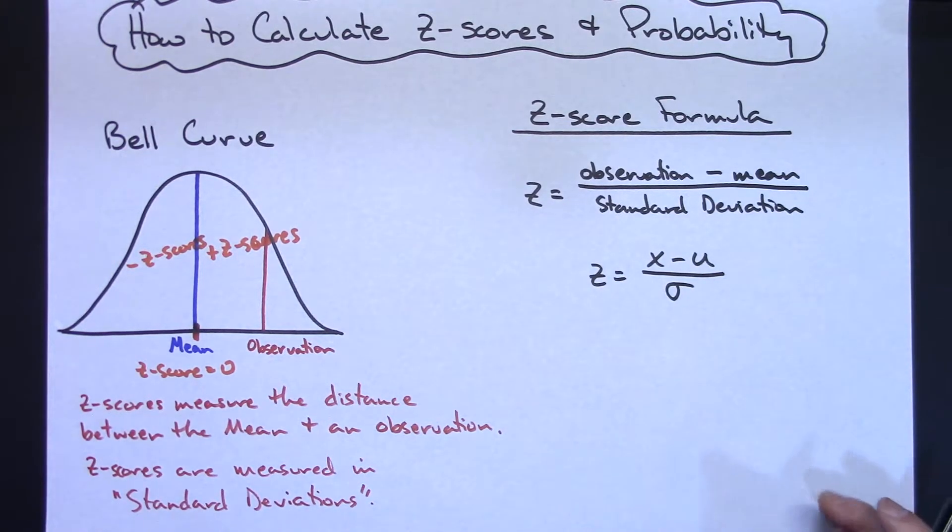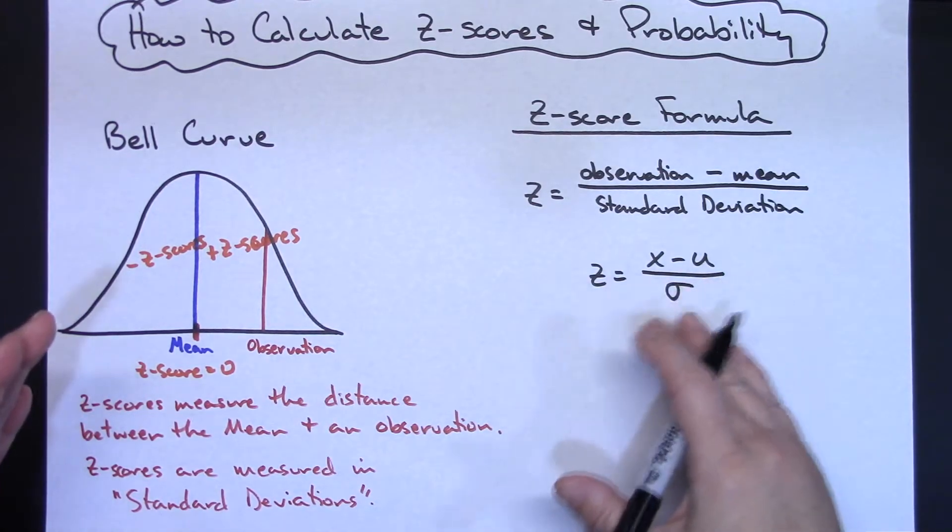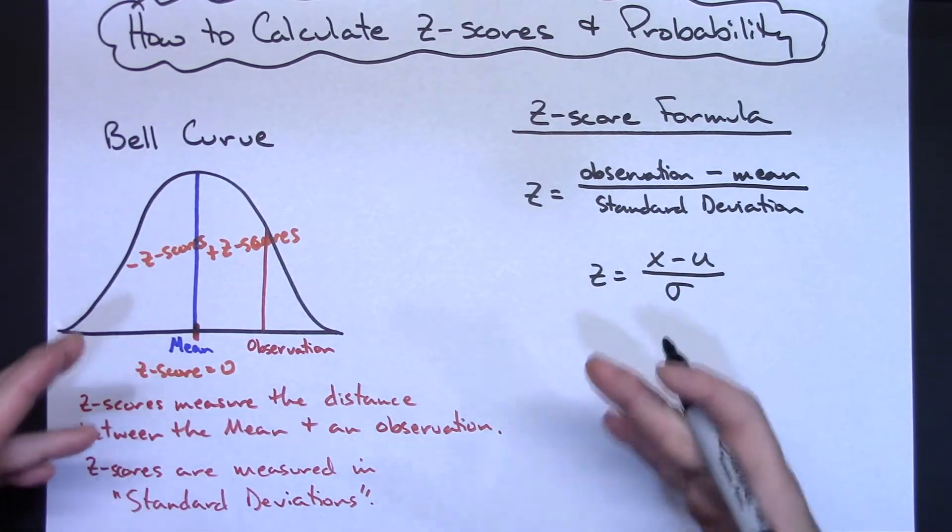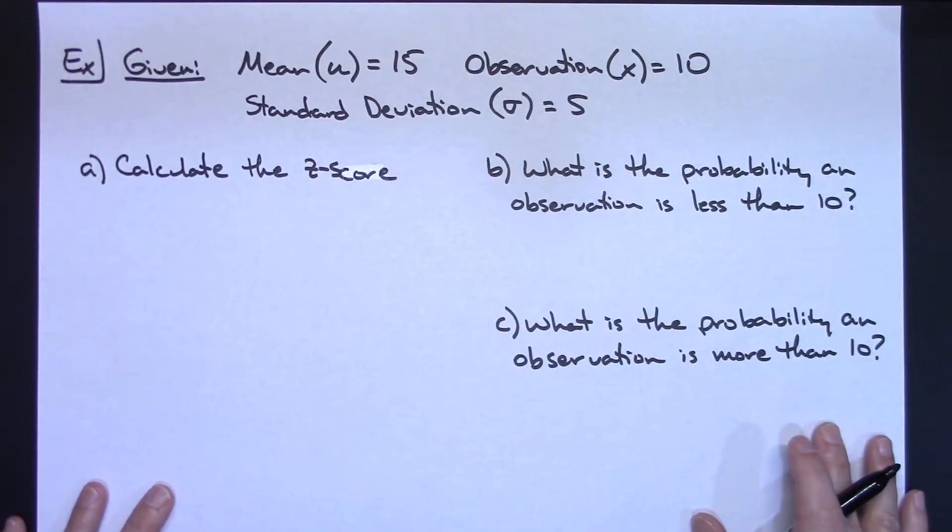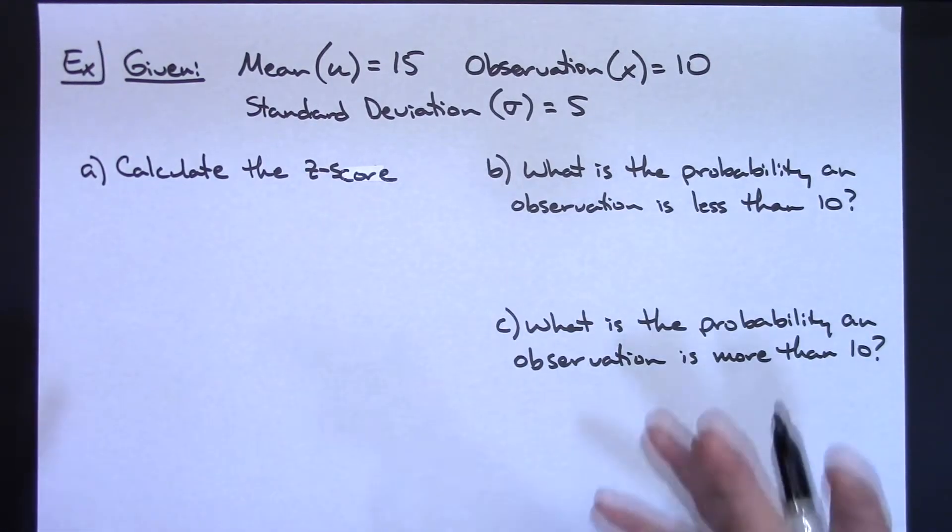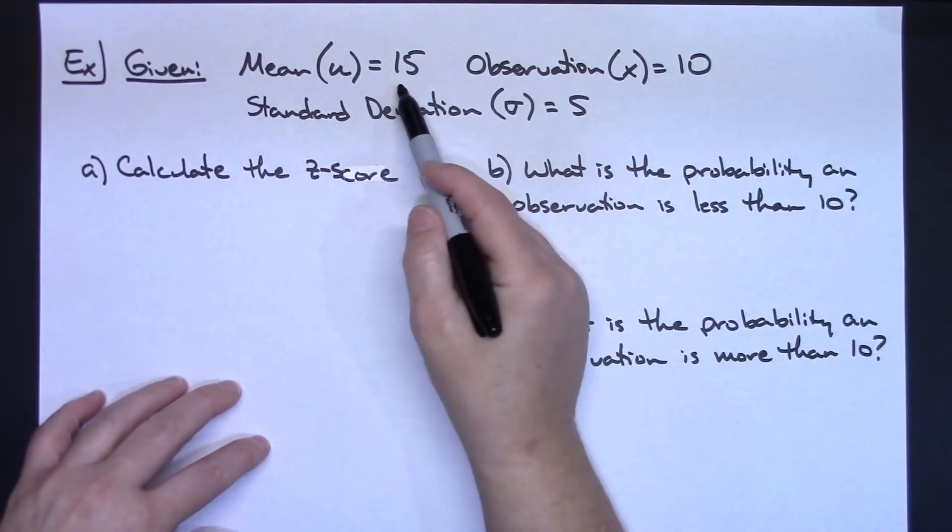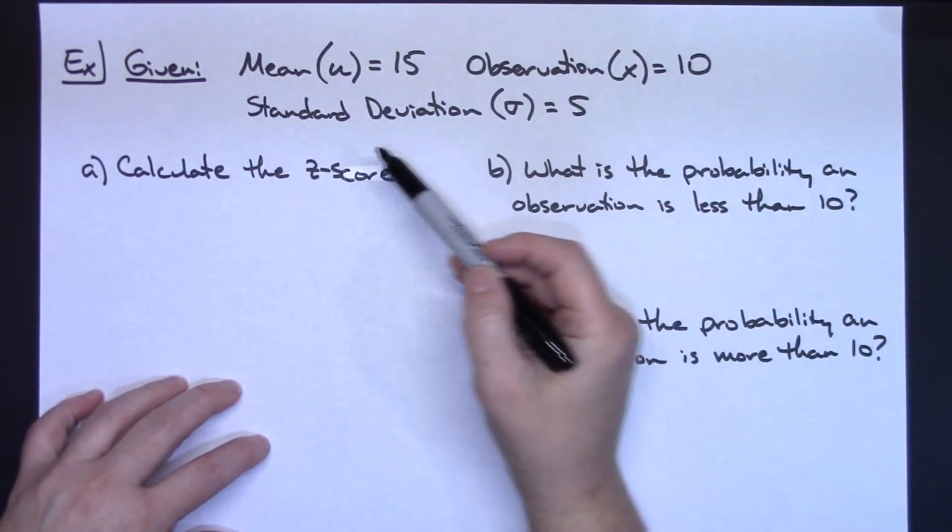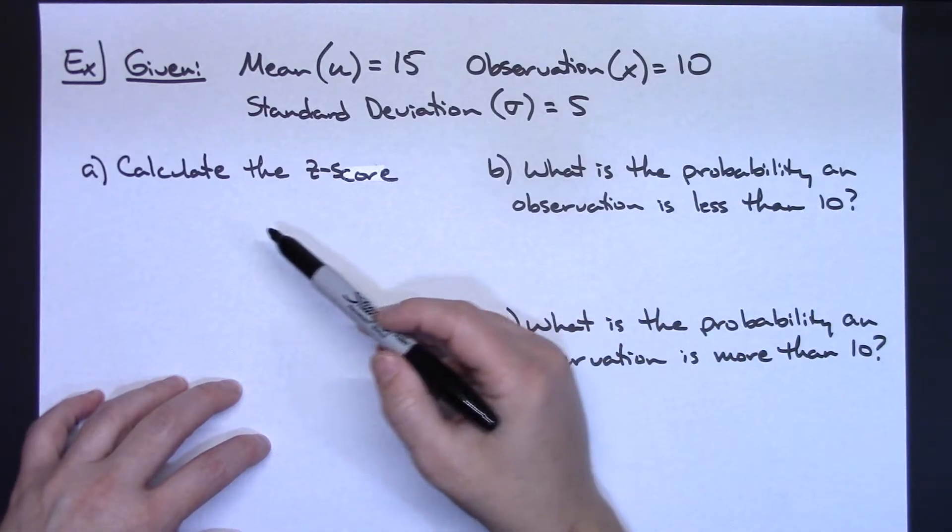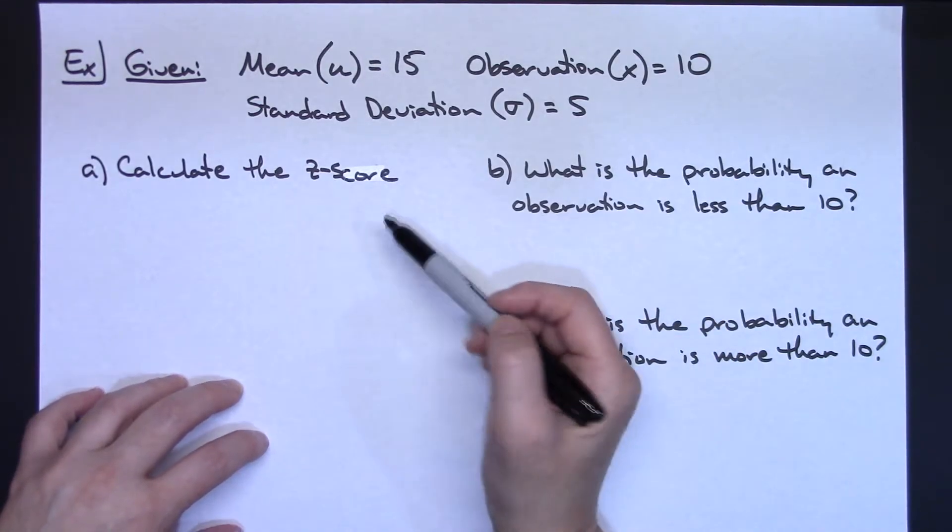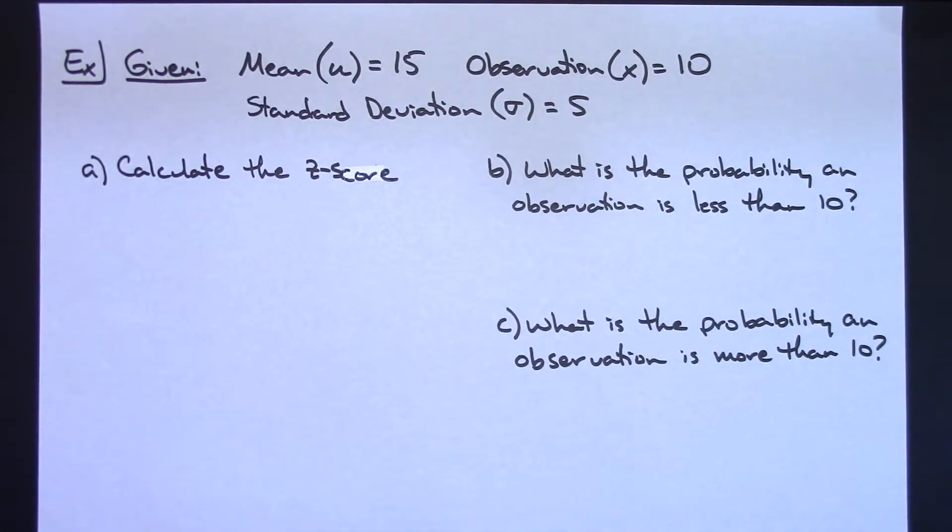Now let's take a look at an example of calculating a z-score and then finding the probability that goes along with it. For this example, I've just randomly said, let's say we're given a mean of 15, an observation of 10, and a standard deviation of 5. Now we're going to calculate the z-score.